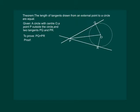Look at the proof. Clearly we know that angle OQP and ORP are 90 degree angles. We have done a theorem previously which says that the tangent at any point of a circle is perpendicular to the radius through the point of contact.